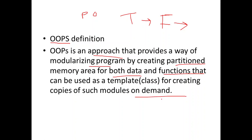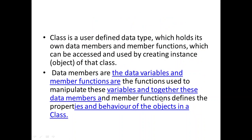What is the difference between class and object? We can think of a class as a sketch of a house. It contains all the details about the floor, doors, windows, etc. Based on this description, we build the house, and the house is the object. The plan is the class, whereas the house is the object — that is the difference between class and object.